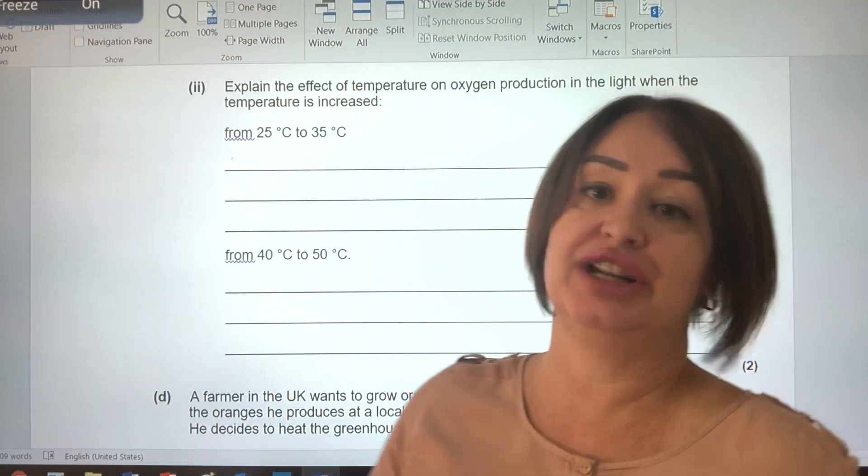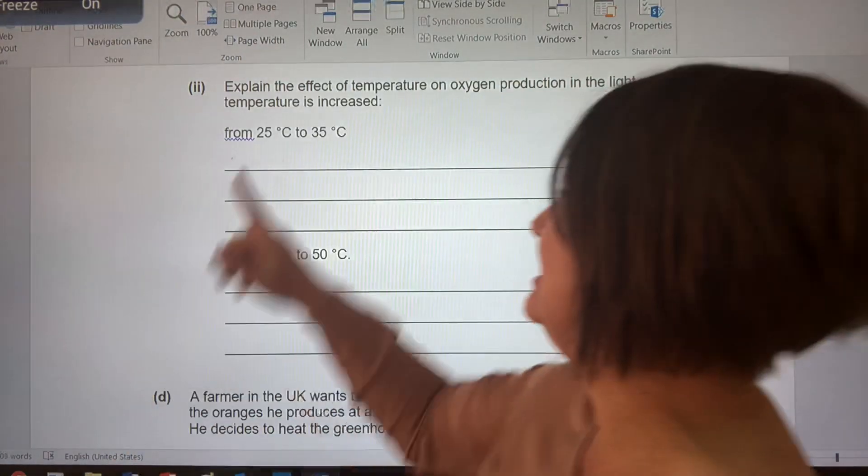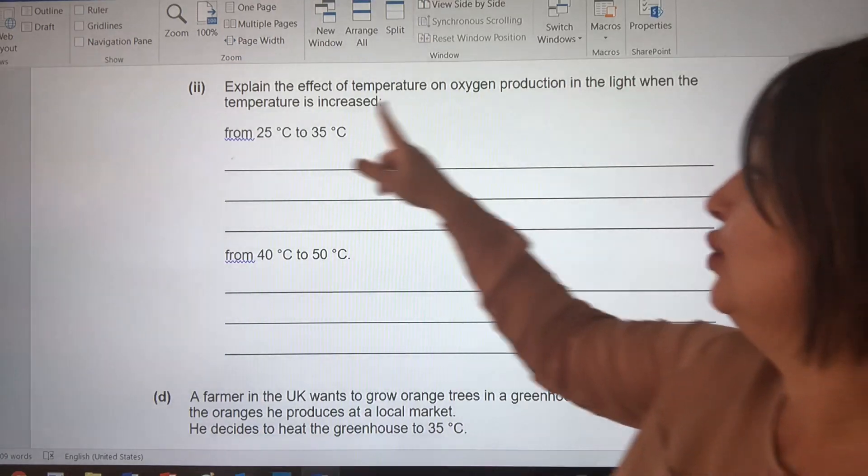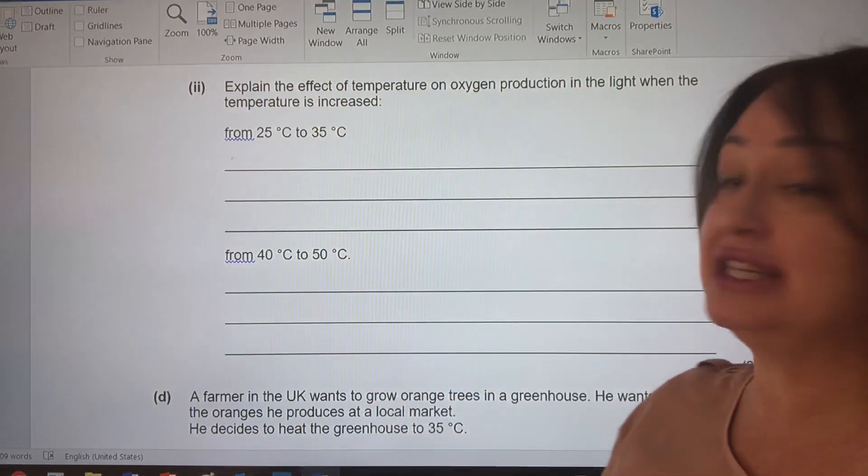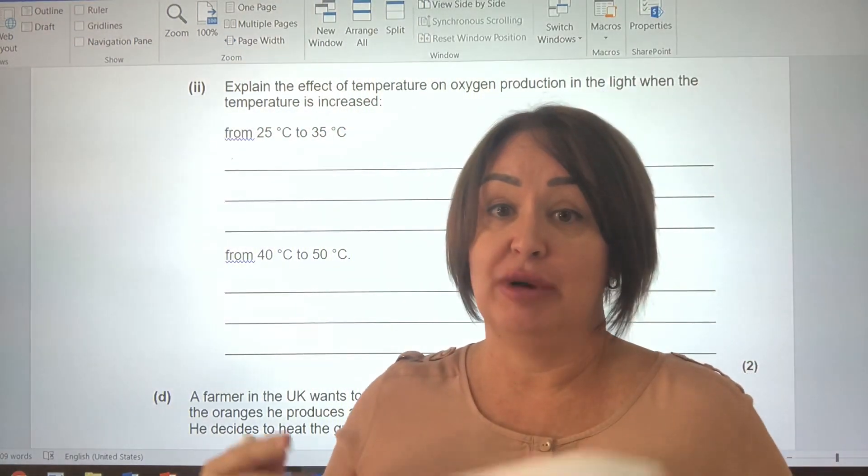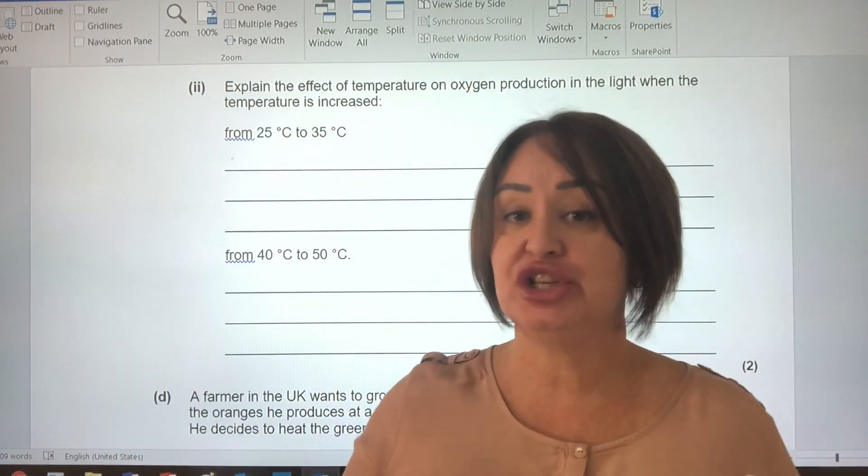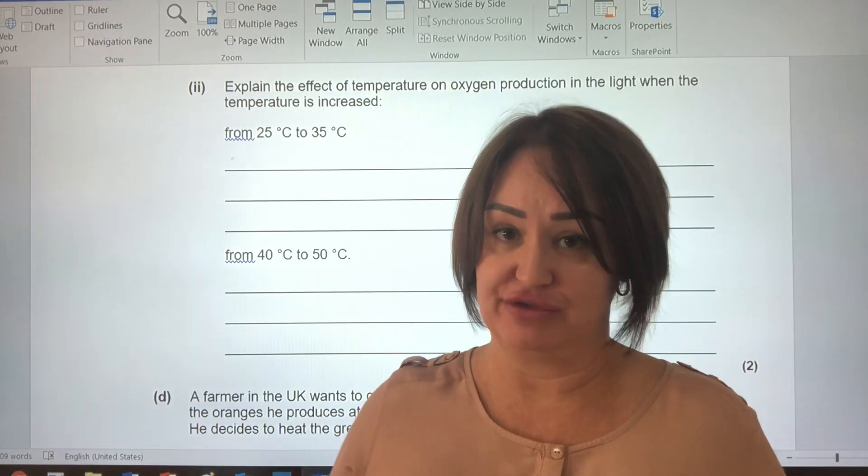Same question, now they're asking us to explain it. And it says, explain the effect of temperature on oxygen production in the light when temperature is increased. We know from biology and from chemistry that the more energy you give particles, the more collisions and the higher the rate of reaction.